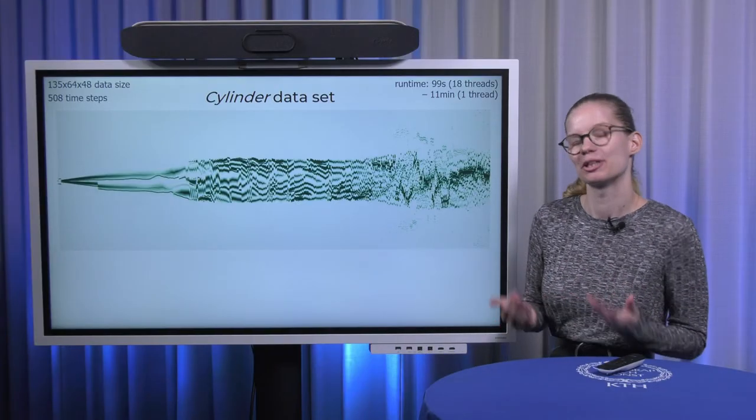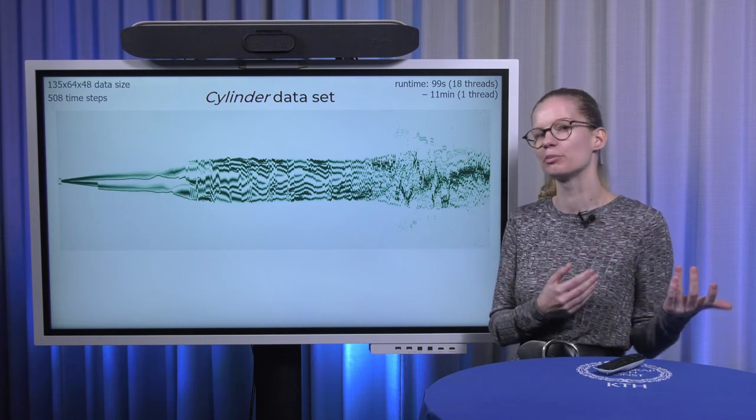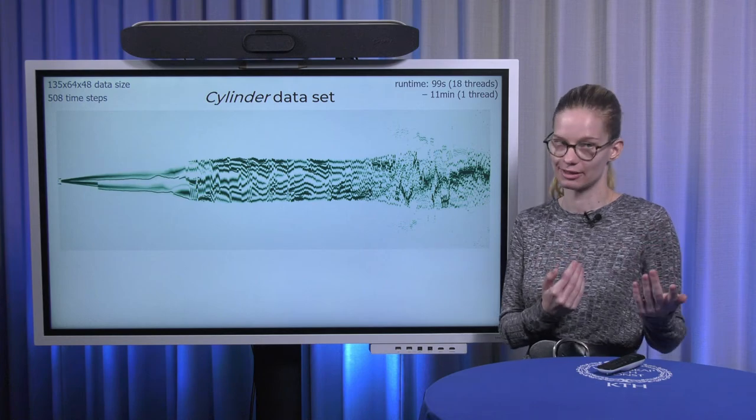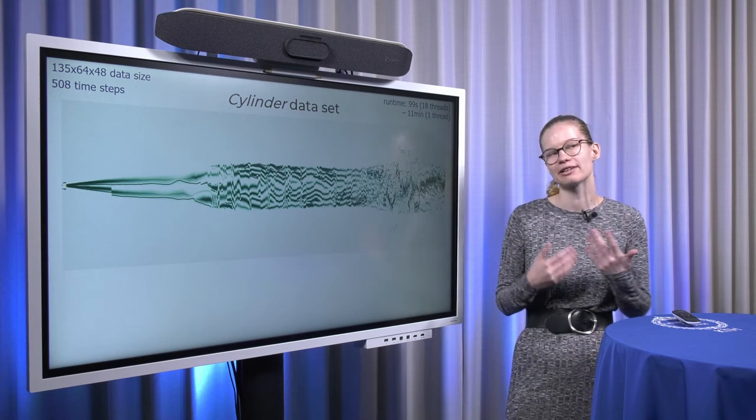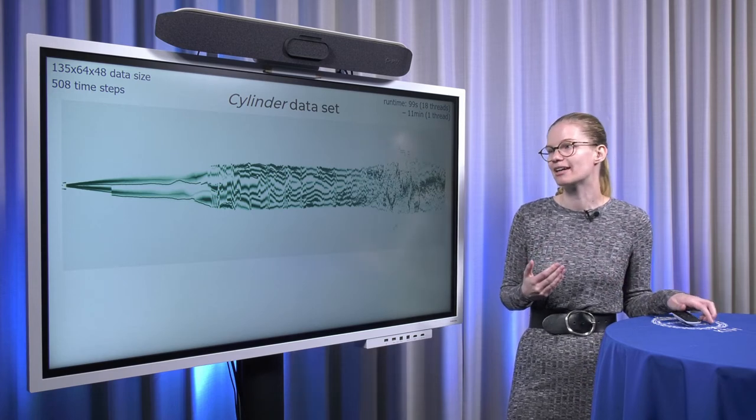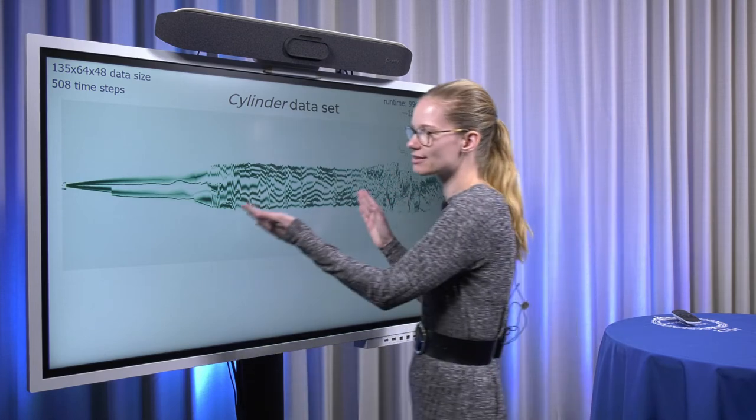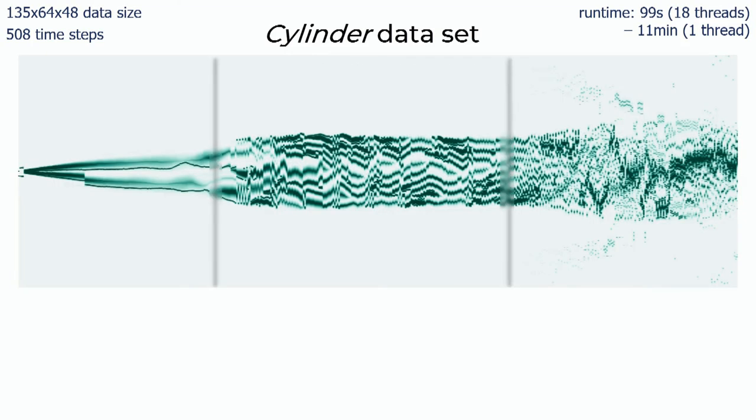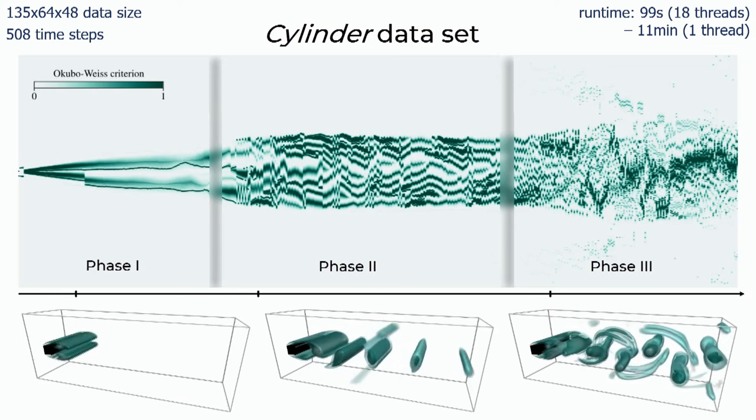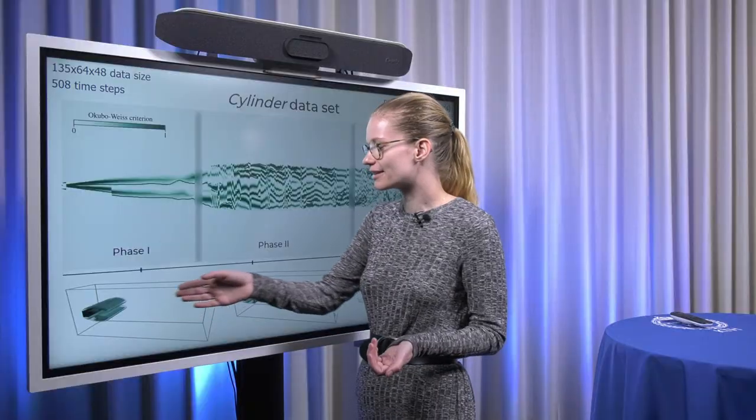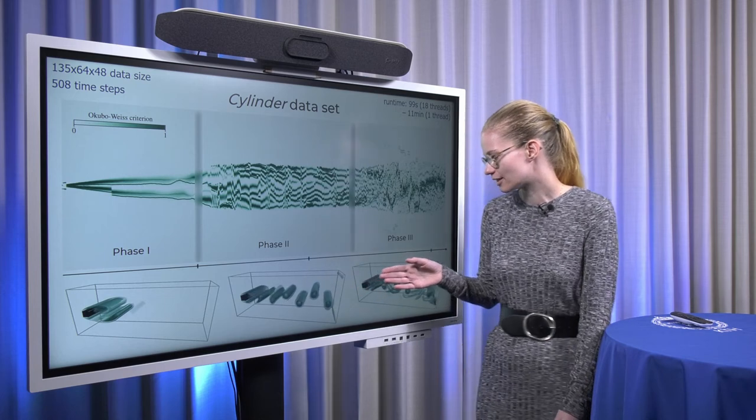The temporal overview that we create with our visualization can, for example, also help us to identify distinct time periods where the behavior is really different in the data. This is an example for a cylinder dataset, capturing the flow behind a square cylinder. And we can see in the visualization already that there really seem to be three distinct phases. And that is, of course, also captured in the original data. In the very beginning, we just have a few components right behind the cylinder. And then, over time, more components form that eventually leave the domain. And finally, we have more turbulent behavior with many components that are spread out all over space.